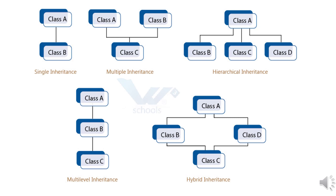In multi-level inheritance, class C is inherited from class B, and class B is also inherited from class A. So a class is derived from another class which is itself derived from another class — this is called multi-level inheritance.